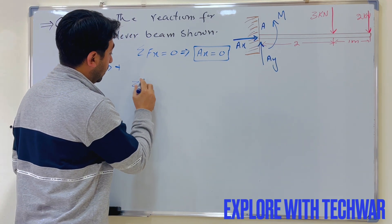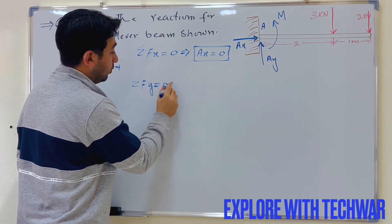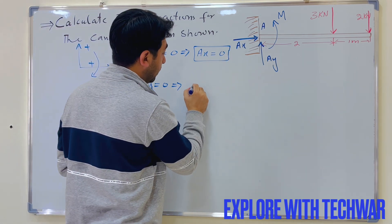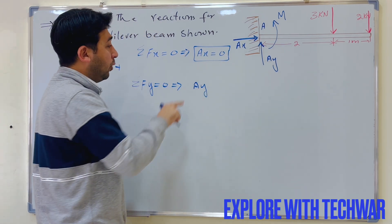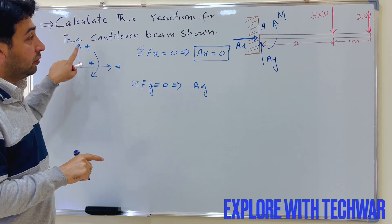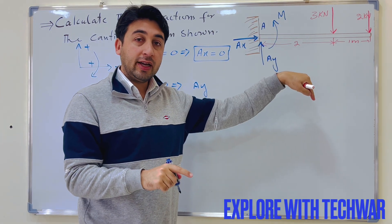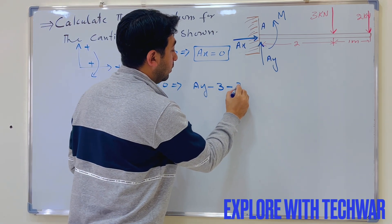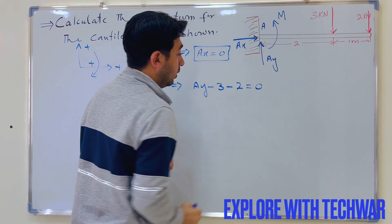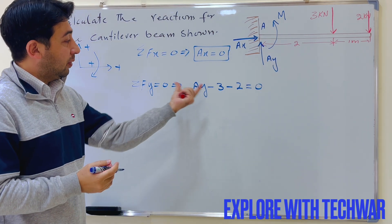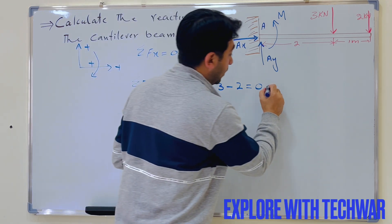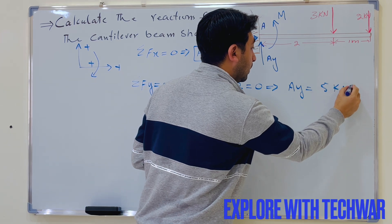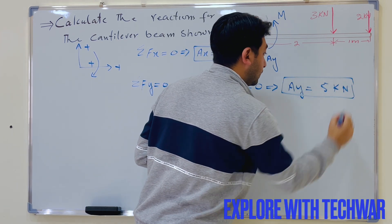To find AY, we take the sum of forces in the Y direction equal to zero. The forces in the Y direction are: AY acting upward (positive by sign convention), minus three kilo Newton, and minus two kilo Newton acting downward. Setting this equal to zero gives AY equal to five kilo Newton.